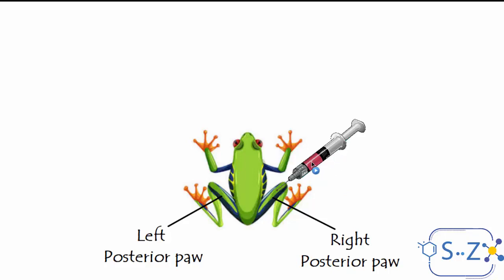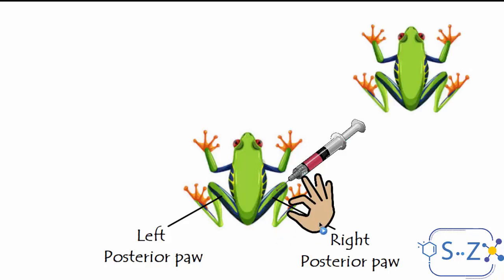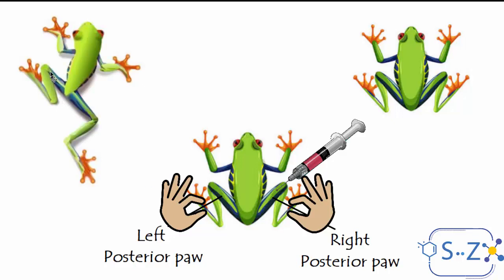First of all, they applied anesthesia to the right posterior pole. Anesthesia is the chemical substance used in surgeries — it's used to put the patient to sleep in order to perform the surgery. After they applied anesthesia to the right posterior pole, they pinched it again as a stimulus, but this time nothing happened — the frog didn't flex any pole, not the right nor the left posterior pole. When they pinched the left posterior pole without any anesthesia, the frog flexed the left posterior pole as usual, the same reaction as the previous experiment.